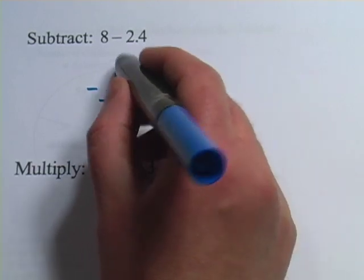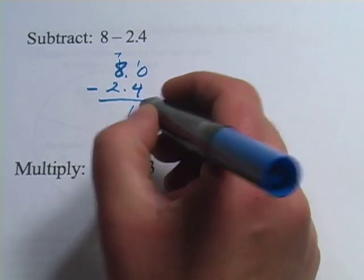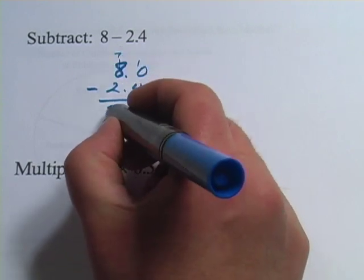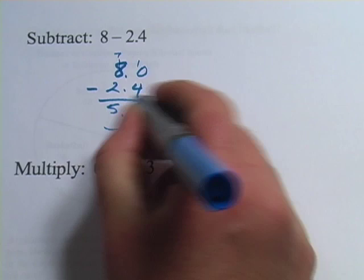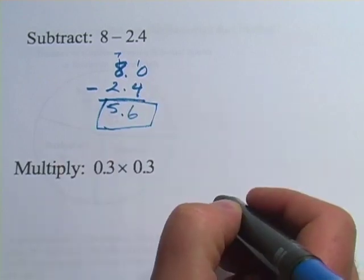Let's see, it looks like I'm going to have to borrow here. So 10 minus 4 is 6, 7 minus 2 is 5, and then we bring the decimal point down and our answer is 5.6.